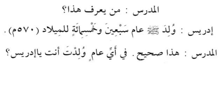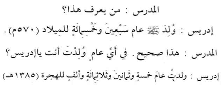Al-mudarris says: Hadha sahihun - this is correct. Fi ayy 'amin wulita anta ya Idris? In which year were you born? Wulita - fu'ila passive; the naib fail is ta representing anta. This anta is for emphasis. Idris says: Wulidtu 'ami khamsatin wa thamaneen wa thalathaimi'atin wa alfin lil hijr. Alfin is 1000, thalathaimi'atin is 300, thamaneen is 80, and khamsatin - so 1385 Hijri.